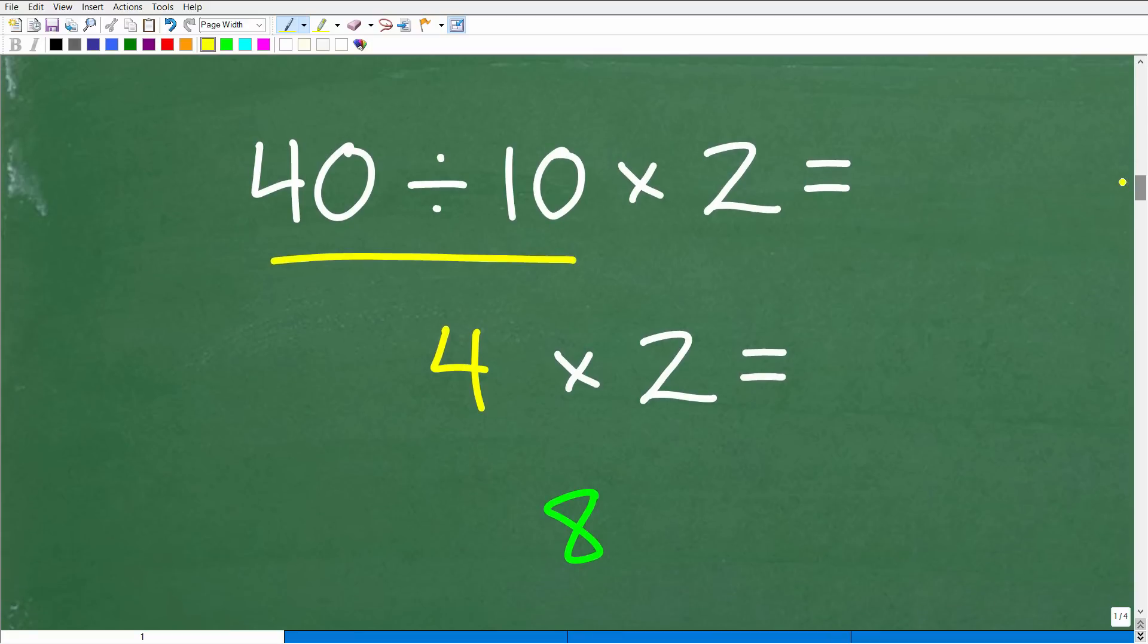So now that we understand the correct order of operations, this is super easy. And so we got 40 divided by 10. That is four. So now we have four times two. There's nothing more to do in this problem other than this multiplication. So four times two, of course, is eight.